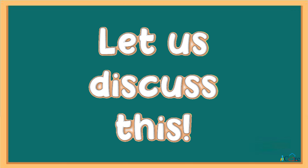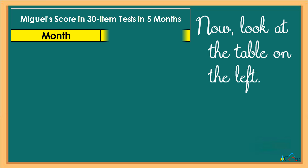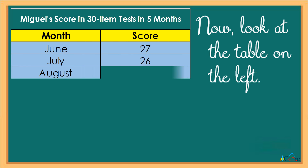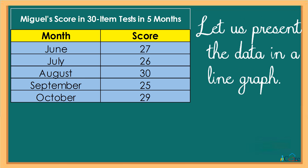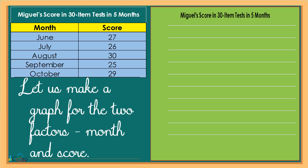Let us discuss this. Now, look at the table on the left. Let us present the data in a line graph. Remember, a line graph is a graph that uses lines to join points which represent a data set. Let us make a graph for the two factors, month and score.